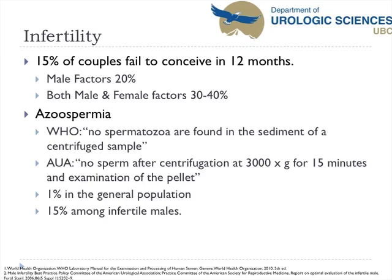Infertility affects approximately 15% of couples that failed to conceive in 12 months. Male factors are responsible for 20%, and both male and female in 30 to 40%. Azoospermia is defined by the World Health Organization as no spermatozoa found in the sediment of a centrifuged sample, whereas the AUA definition is no sperm after centrifugation at 3,000 times G for 15 minutes then examining the pellet. It occurs in 1% of the general population and 15% amongst infertile males.